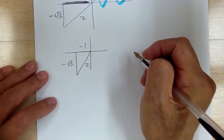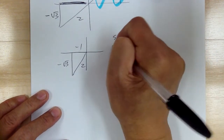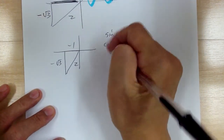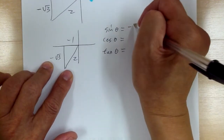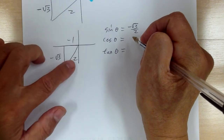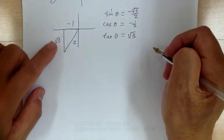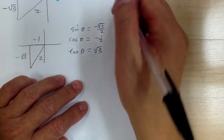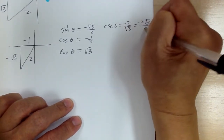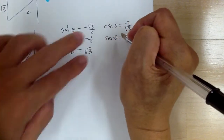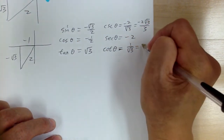The sides are negative 1, negative √3, and hypotenuse 2. Sine theta is vertical over hypotenuse, giving negative √3 over 2. Cosine is horizontal over hypotenuse, giving negative 1 over 2 — the given value. Tangent is sine over cosine, giving √3. For the secondary functions: cosecant is the reciprocal of sine, so negative 2 over √3, which simplifies to negative 2√3 over 3. Secant is the reciprocal of cosine, giving negative 2. Cotangent is the reciprocal of tangent, giving 1 over √3, which simplifies to √3 over 3.